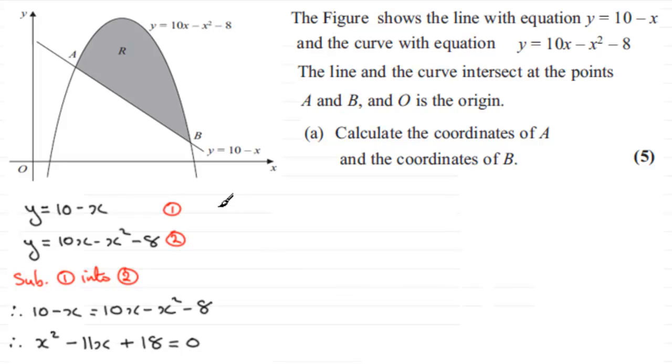Next, I would want to factorize this rather than use the quadratic formula. You can use the quadratic formula if you wish, but the suggestion is that it is going to factorize because they don't say calculate the coordinates of A to so many significant figures or whatever. So there is that suggestion this is going to factorize. And indeed it does. Two brackets, and then it's going to be an x and an x and then we need a minus 9 and a minus 2.